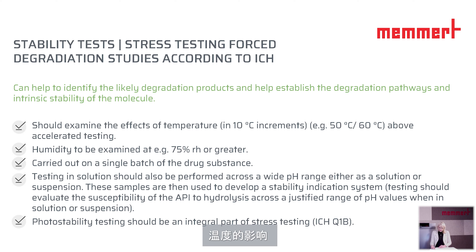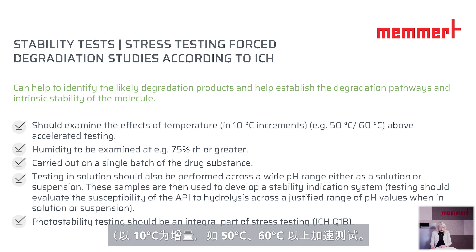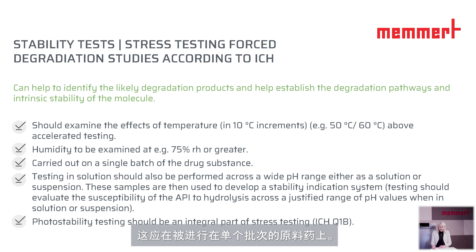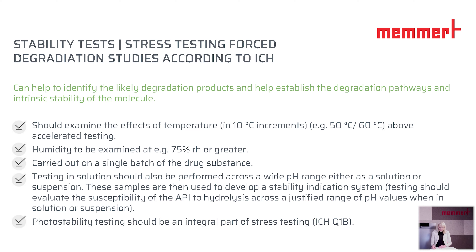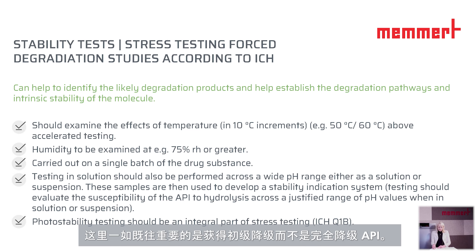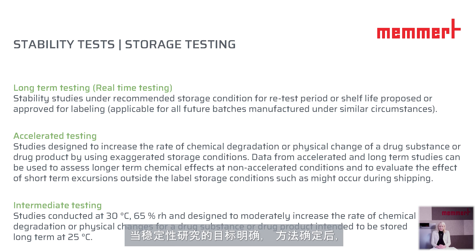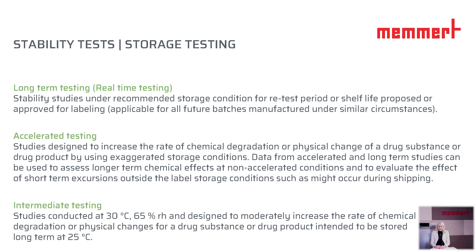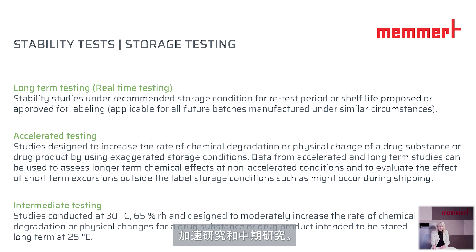It is mentioned that the effects of temperature should be examined in 10-degree increments, achieving 50 degrees or 60 degrees above accelerated testing. Humidity should be examined at 75% RH or greater. Temperature testing should be carried out on a single batch of the drug substance. Testing in solution should also be performed across a wide pH range, either in solution or suspension. Photo stability testing is an integral part of stress testing — that is testing with light. Importantly, the aim is always to achieve primary degradation and not to completely degrade the API. Once the objective of the stability study is established and the method is certain, the drug will be evaluated under a much larger scale through formal stability studies.